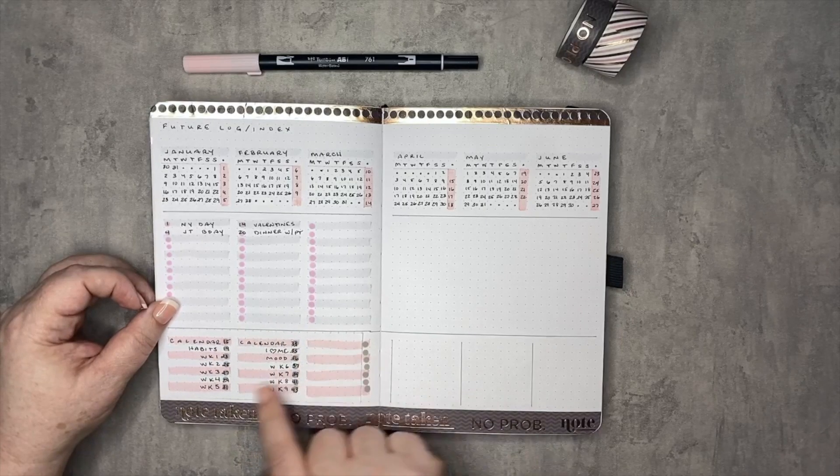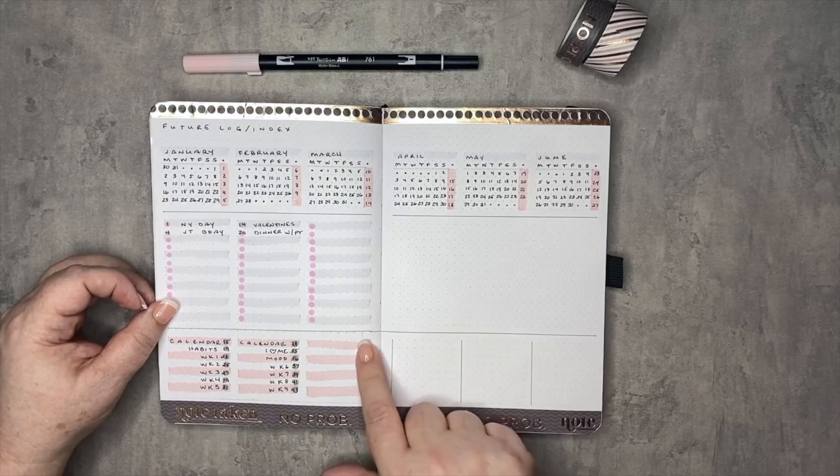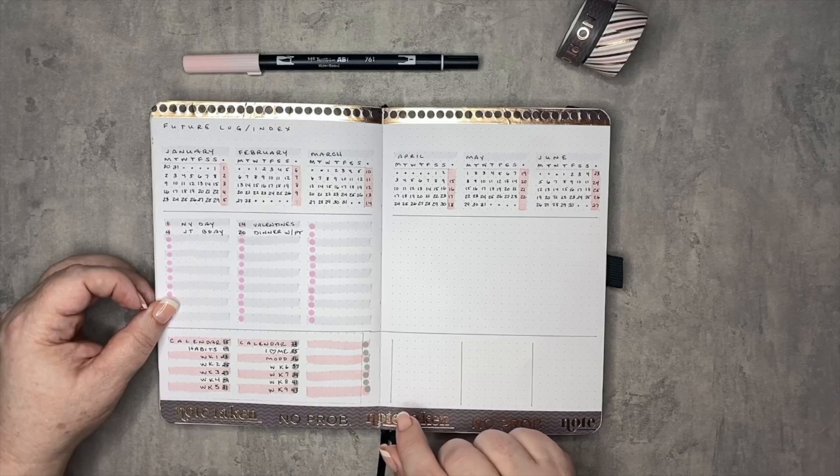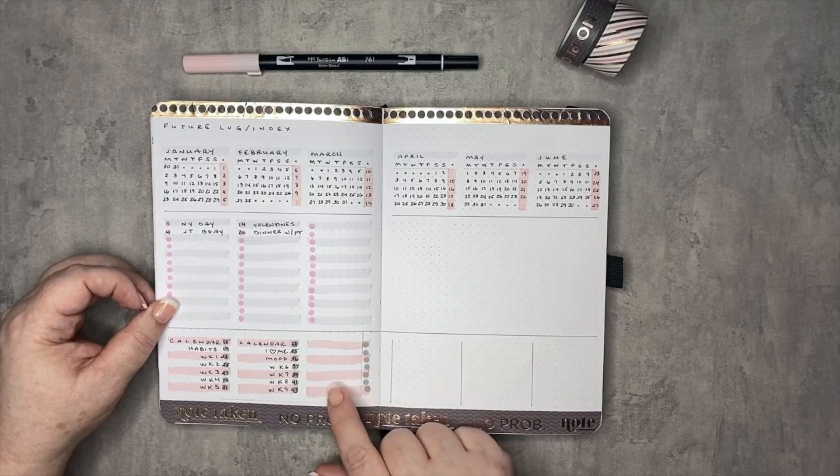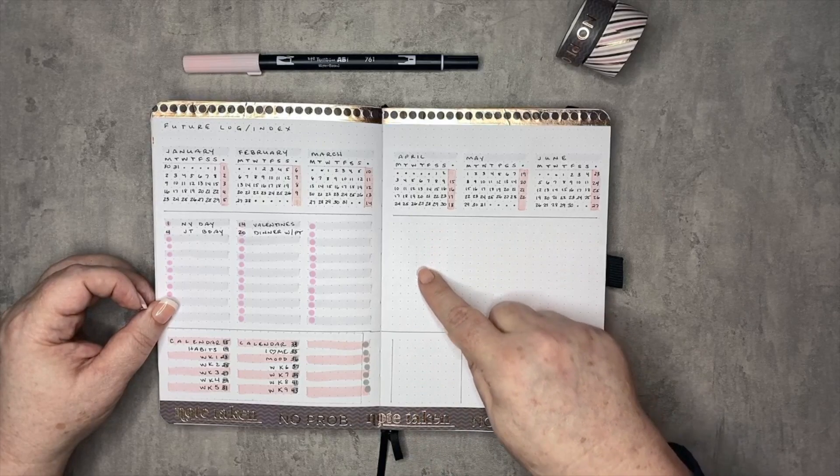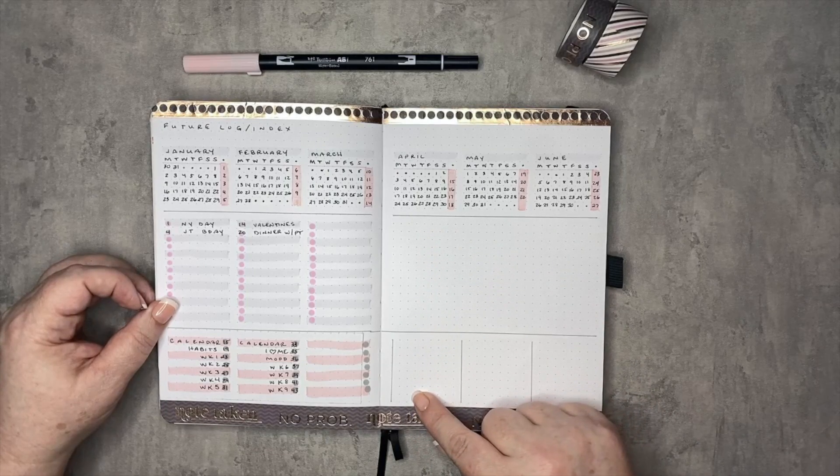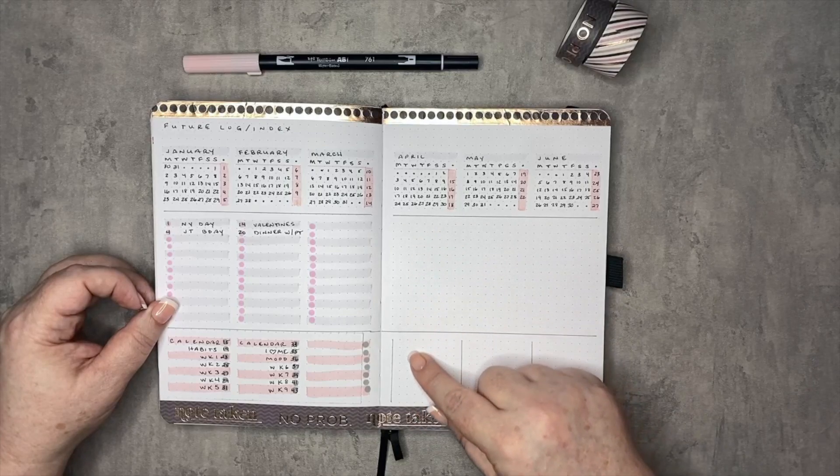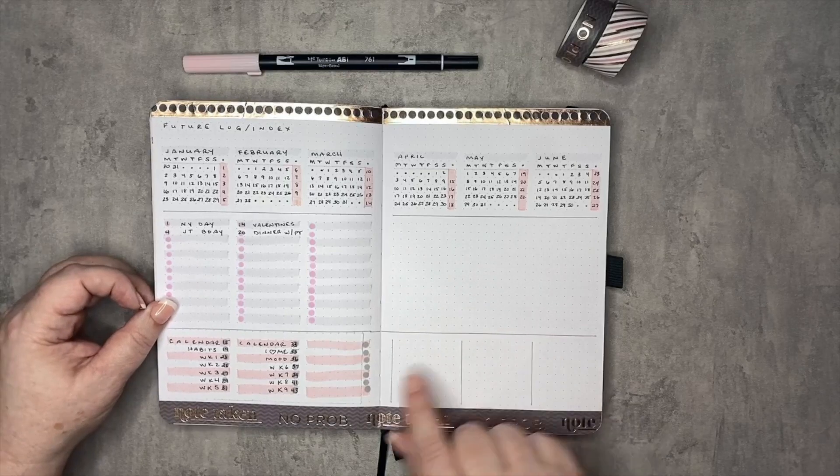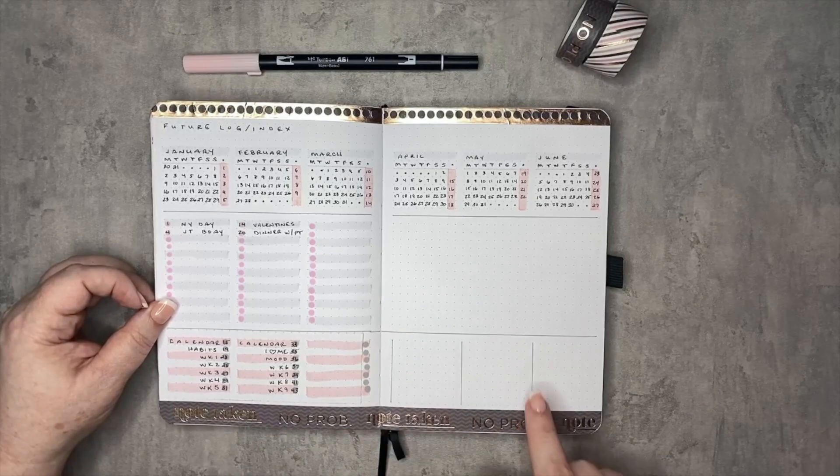And again this would just change depending on how many pages you have. So if you're one of those people that always has the same number of pages for every single month in your journal, then this is definitely a great index to explore. Especially if you don't use all of this space for your appointments and events. I mean if maybe you feel like you're wasting space, then you can definitely use this particular layout. And again I have just framed it with some washi tape.